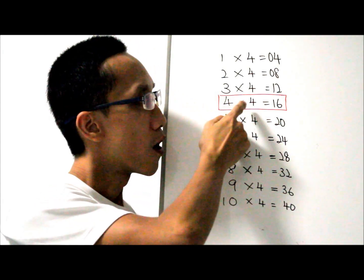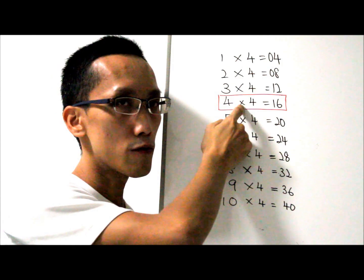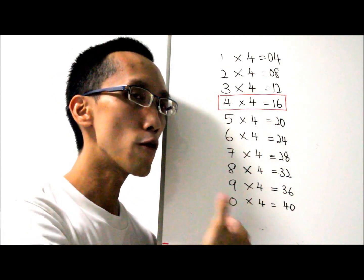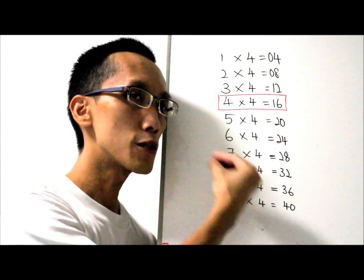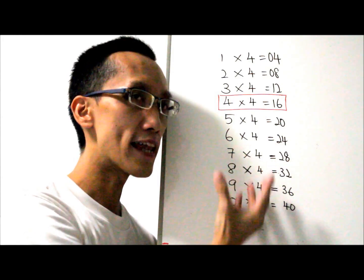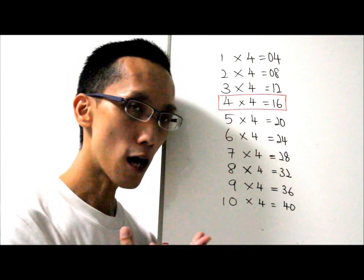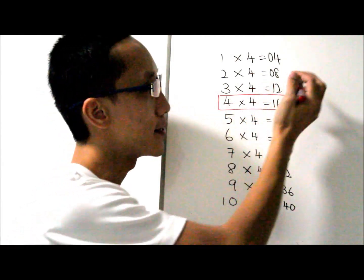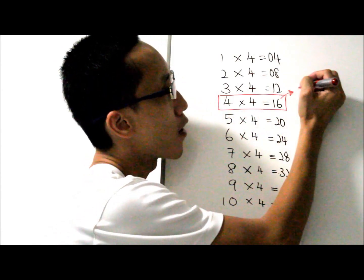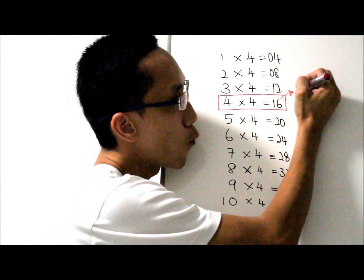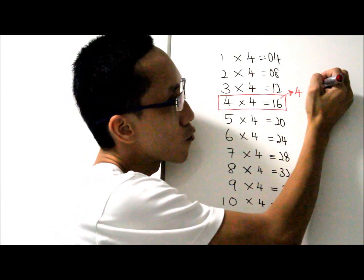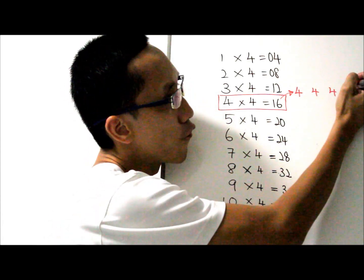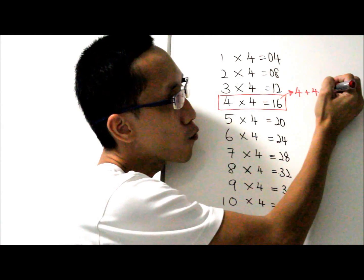Look here. Not only telling your child that 4 times 4 equals 16, you can also show them how multiplication is related to addition. So 4 times 4 equals 16 also means that there are four 4s adding together: 1 four, 2 fours, 3 fours, 4 fours adding together.